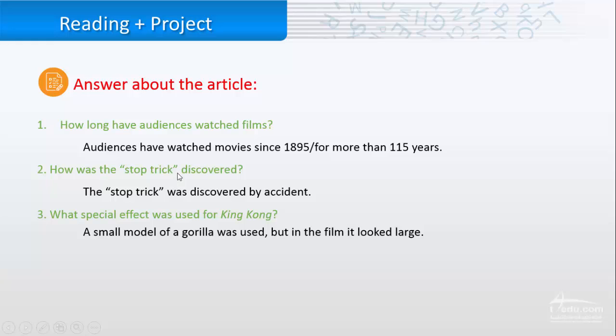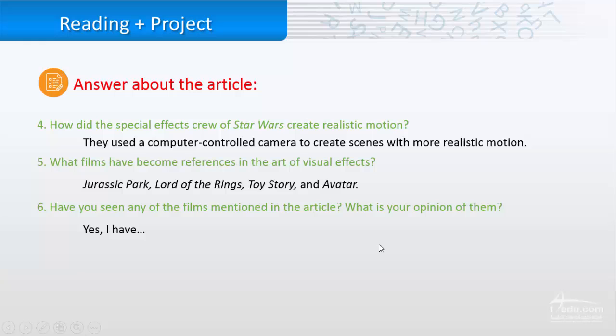How was the stop trick discovered? It was by accident. What special effects was used for King Kong? A small model of Gorilla was used, but in the film it looked large. How did the special effects crew of Star Wars create realistic motion? They used a computer-controlled camera to create scenes with more realistic motion. What films have become references in the art of visual effects? Jurassic Park, Lord of the Rings, Toy Story, and Avatar.